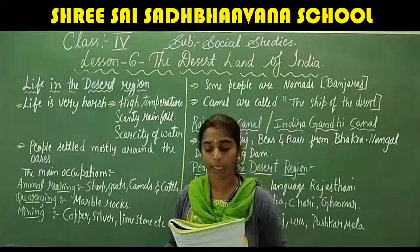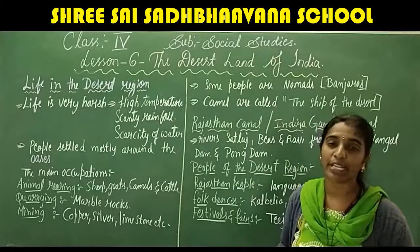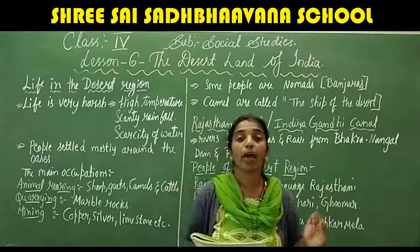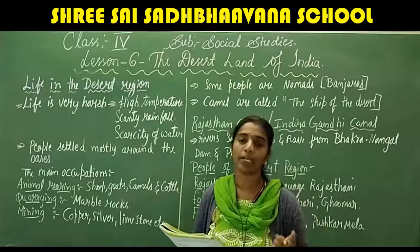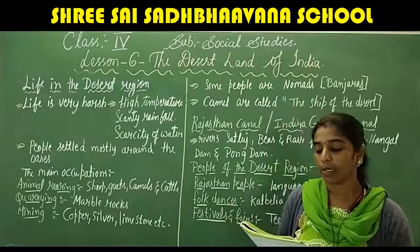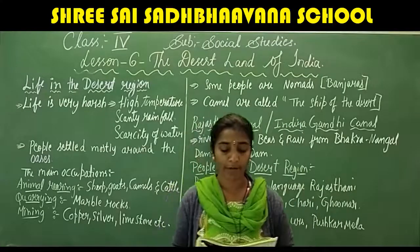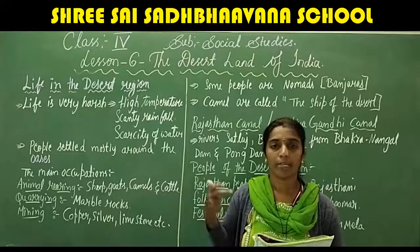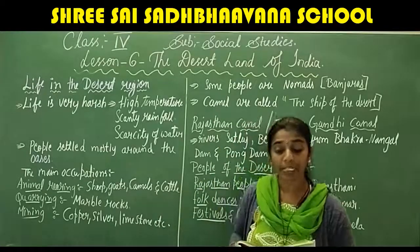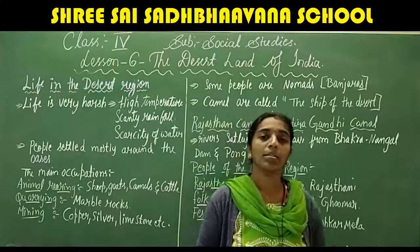A colorful and rich culture prevails in the desert region. Rajasthanis have a great passion for music and dance. Men wear dhotis, kurtas, and colorful turbans. Women wear bright colored skirts called ghagras and cholis. Both men and women cover their heads to protect themselves from the scorching sun. Jainism and Hinduism are the major religions of the people of Rajasthan.